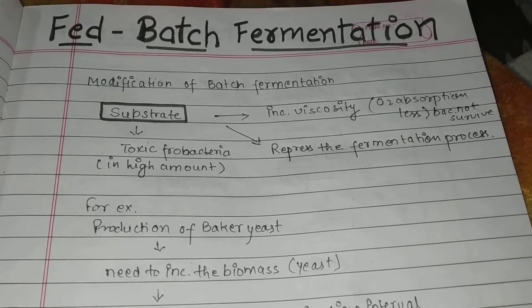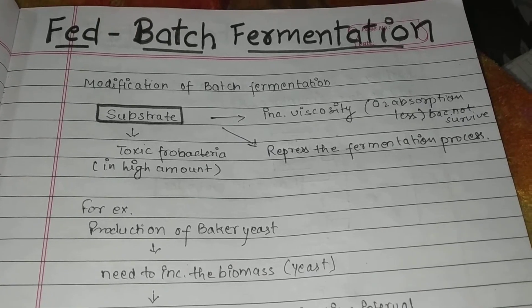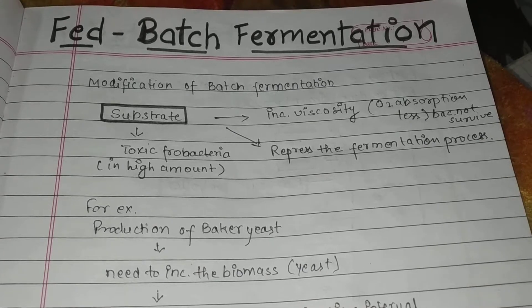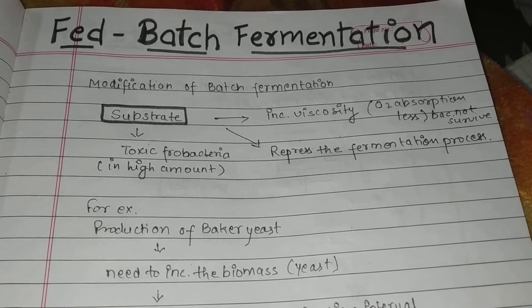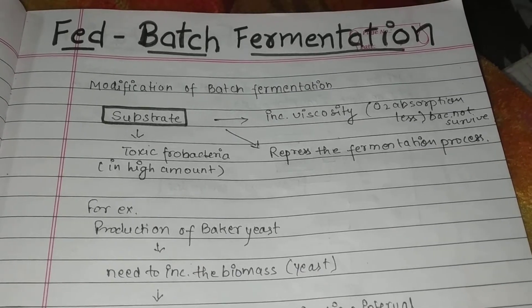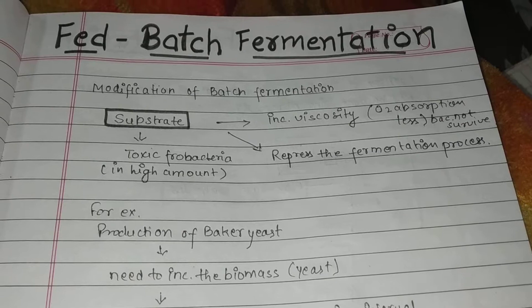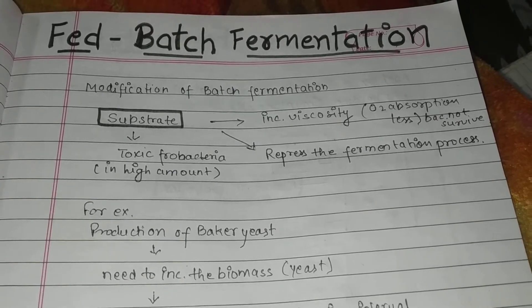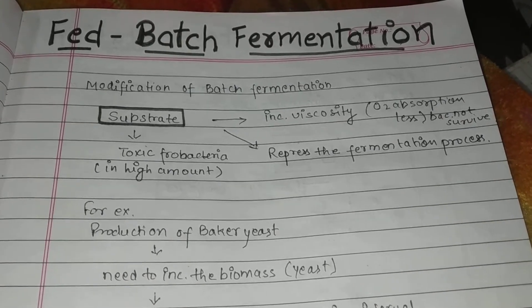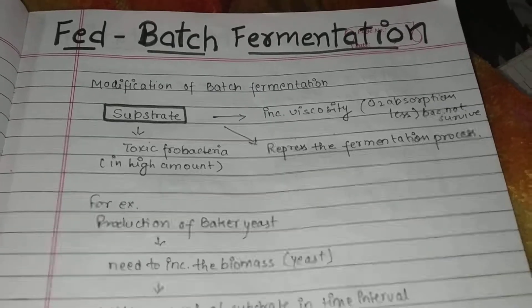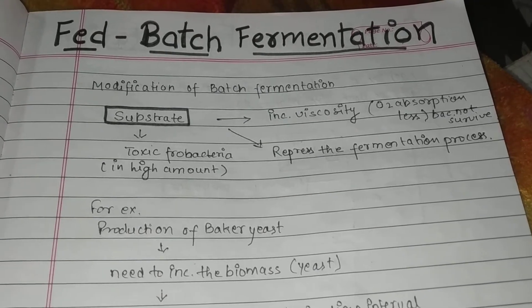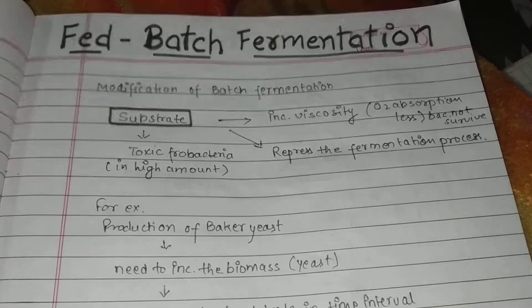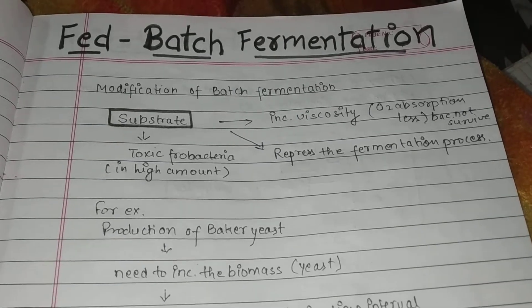For example, if we want to produce baker's yeast in batch fermentation and put all the substrate at once, the production of microorganisms will not be possible as they will die. So for baker's yeast production we have to use fed-batch fermentation.